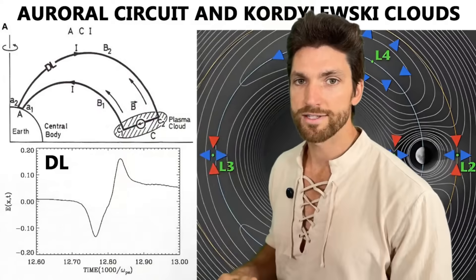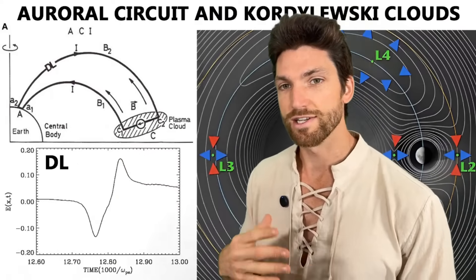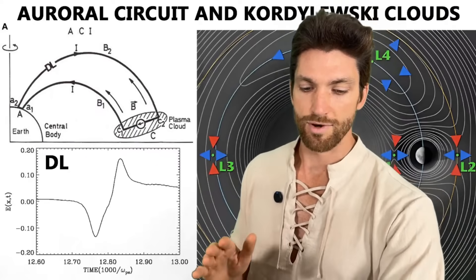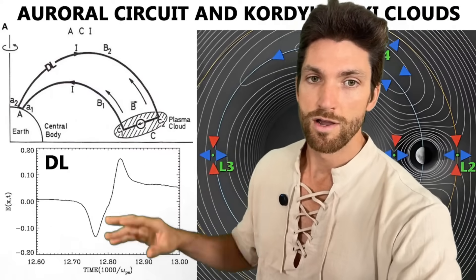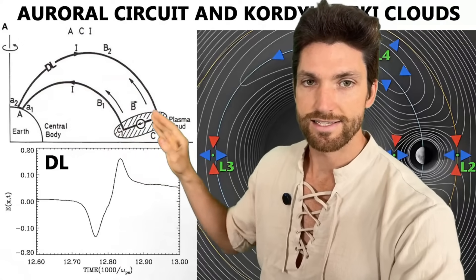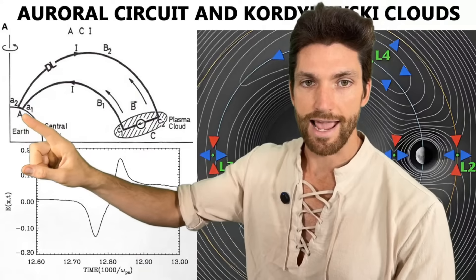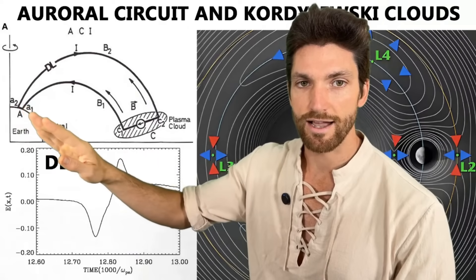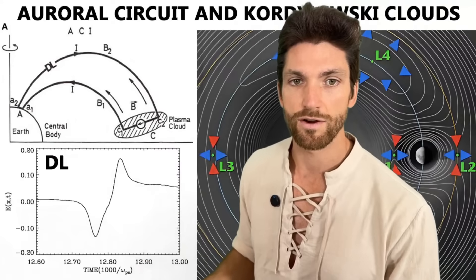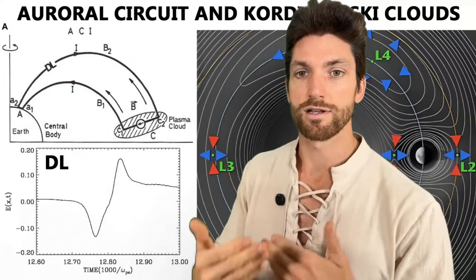I want to talk about auroral circuits really quick as it relates to Kordylewski clouds because there's an interesting idea that I've had. This is by no means guaranteed, but something interesting to think about. We know that there are these auroral circuits that exist, especially during more active storm conditions. So here we have the Earth and then A right there. This is the ionosphere, which is made up of plasma, 1% plasma. It's the upper atmosphere, which means it has conductivity to it and can host an electric current.